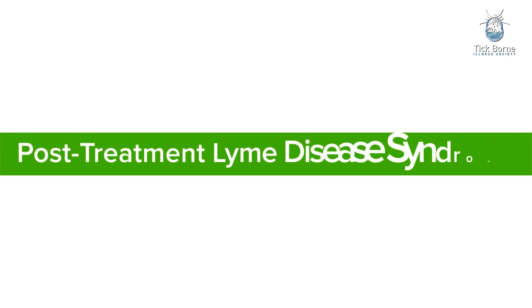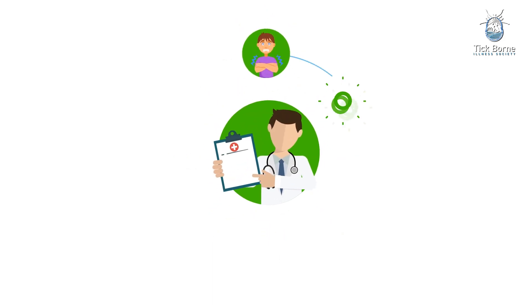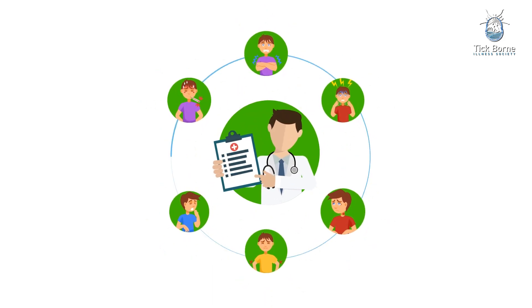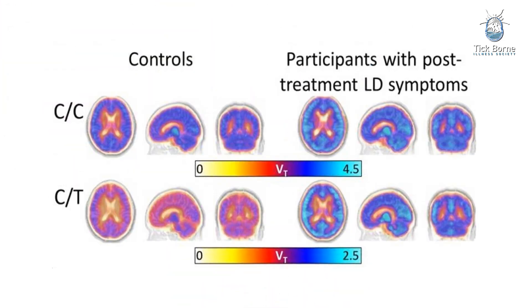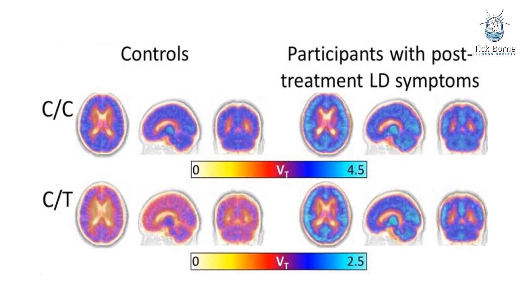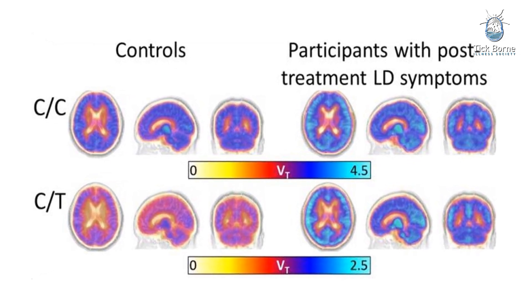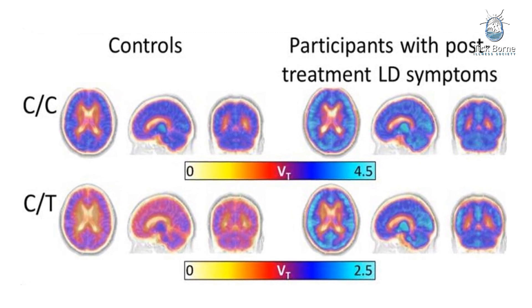Post-treatment Lyme disease syndrome: In the majority of cases, Lyme disease is successfully treated with oral antibiotics. However, physicians sometimes describe patients who have non-specific symptoms like fatigue, pain, and joint and muscle aches after treatment as having post-treatment Lyme disease syndrome (PT-LDS) or post-Lyme disease syndrome (PLDS). The cause is not known.